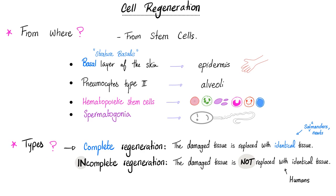We have two types of cell regeneration: complete regeneration and incomplete regeneration. In complete regeneration, the damaged tissue is replaced by completely identical tissue — an example here is the salamander. However, humans experience incomplete regeneration: your tissue is damaged and replaced by something that looks similar but is not identical.